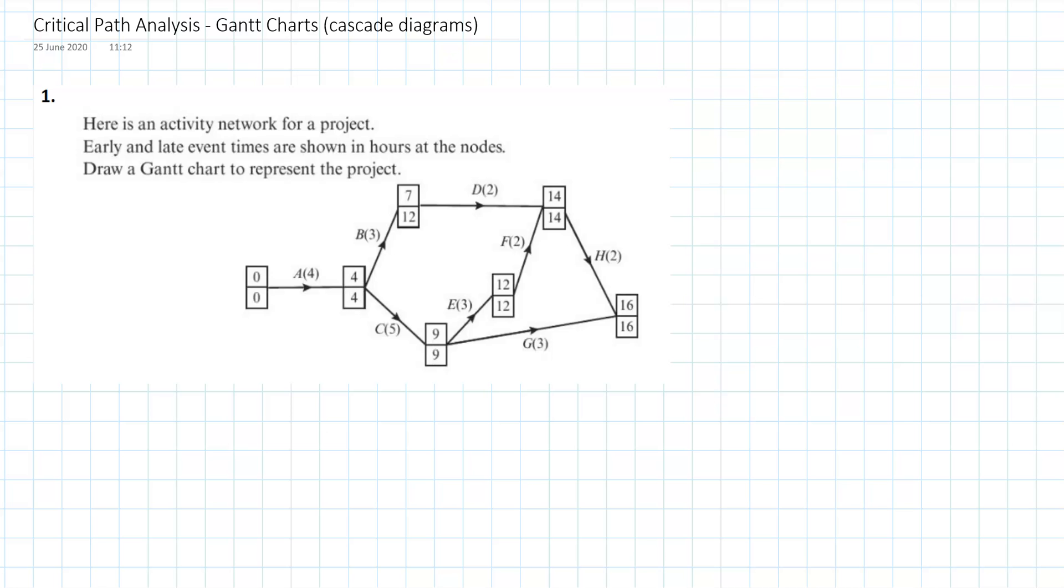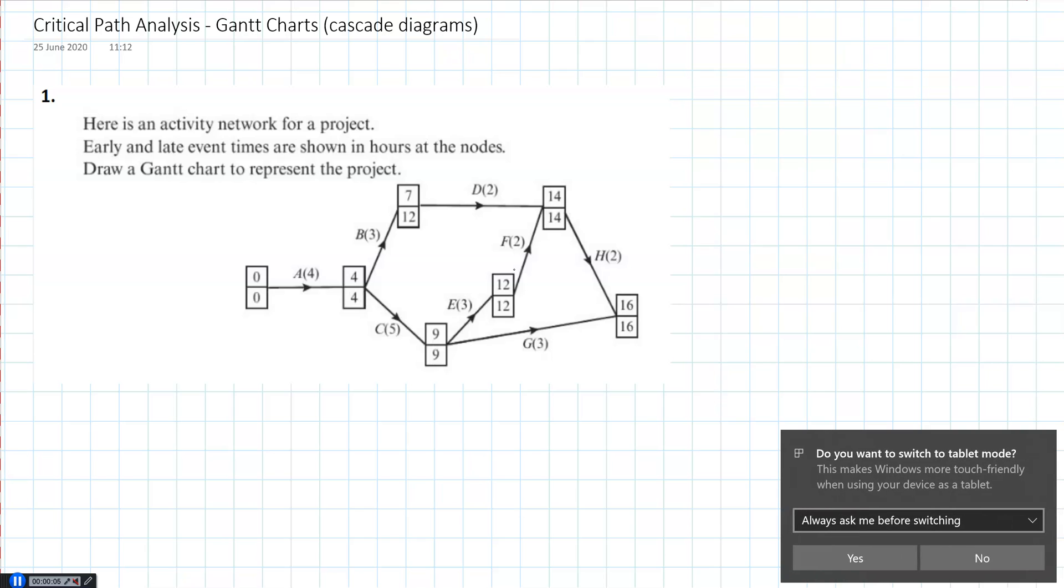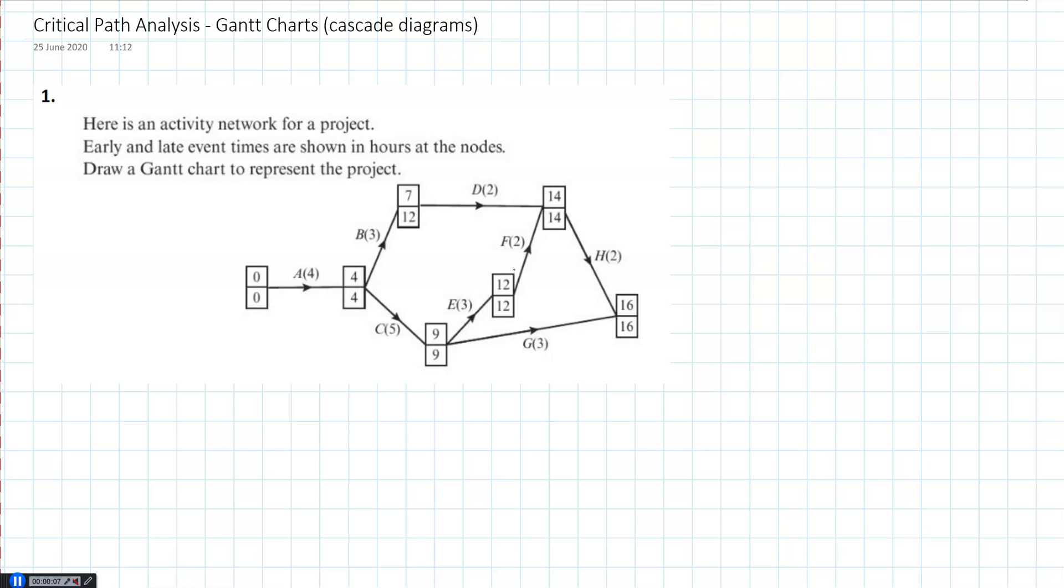Here we're going to look at Gantt charts, also known as cascade diagrams, which is one of the last bits of the critical path stuff that we're going to look at. The only other bit is resource histograms after that. So let's have a look at how we construct these. This should be quite straightforward, but you need to do it in a certain way, so make sure you follow the way that I'm going to show you.